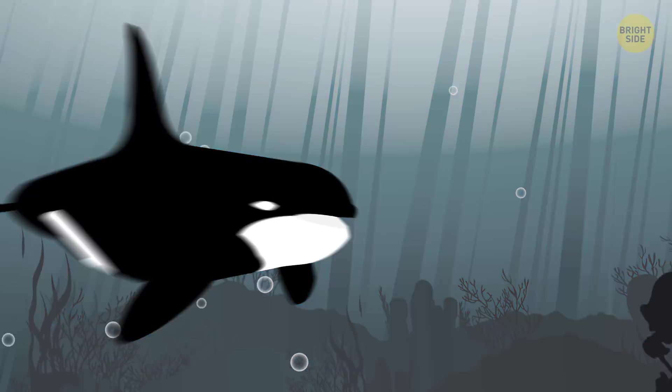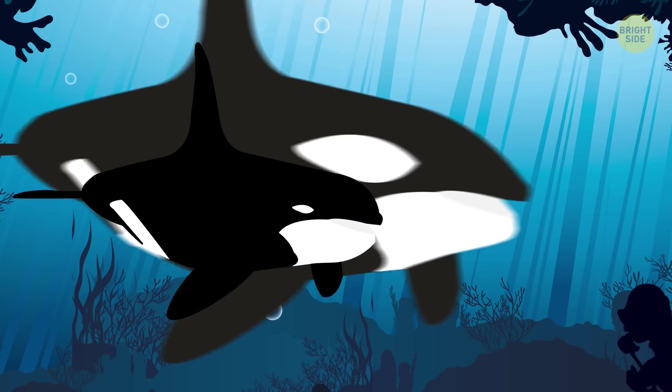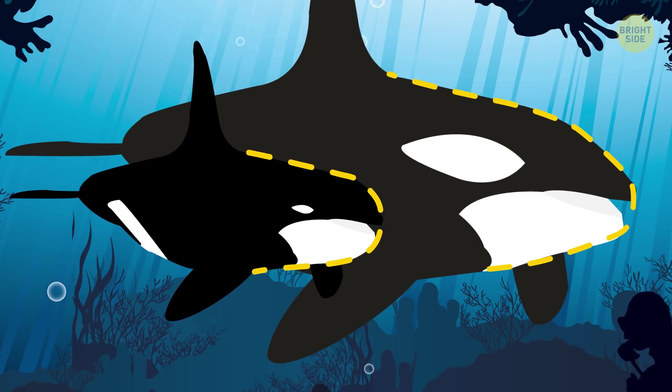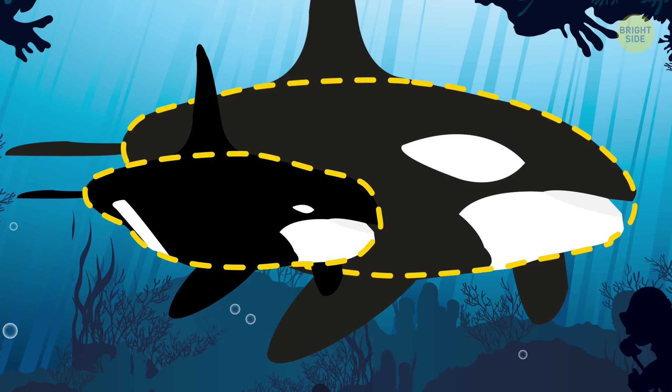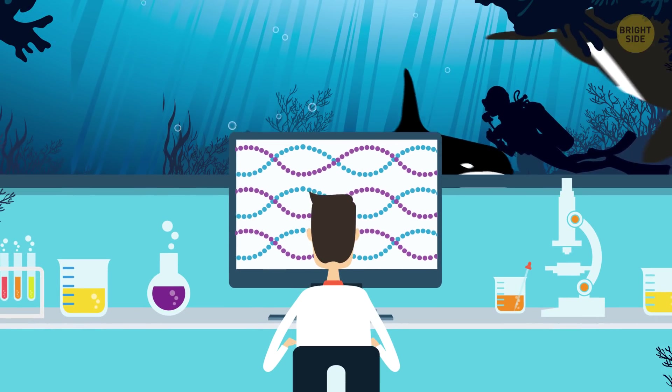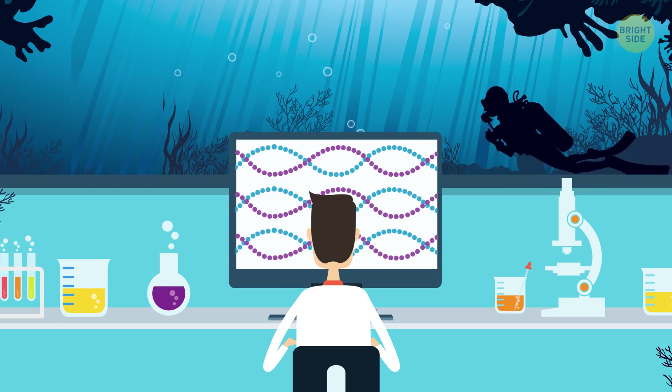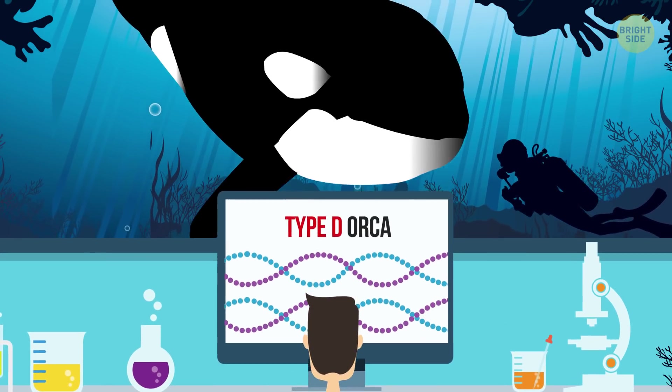At the moment, they're called Type D Orcas. They're pretty similar to their more famous cousins, but they have some distinct features, like a much more rounded head, smaller white eye patches, and an overall smaller body size. For now, researchers have taken skin samples from them and are waiting for the results of a DNA test. If this Type D Orca is a completely new whale, this discovery would be a real sensation!